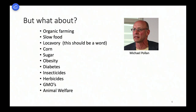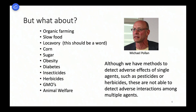Michael Pollan is one spokesperson for the local food movement. It's all about organic farming, slow food, and eating locally produced food. That industrial corn is bad, sugar is bad, obesity comes from the industrial food system, diabetes comes from obesity, insecticides and herbicides poison the environment, GMOs are harmful — particularly in Europe — and that animal welfare really matters. This is what I'd characterize as the subjects of the modern food movement.